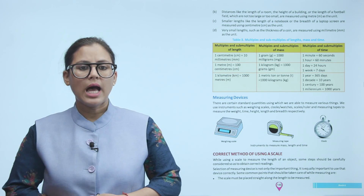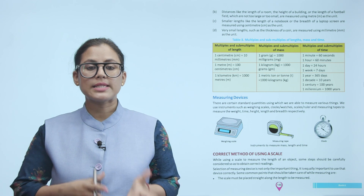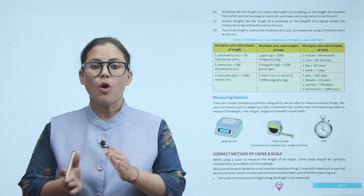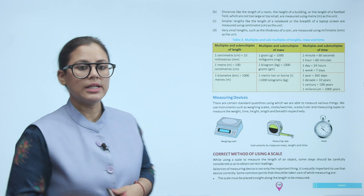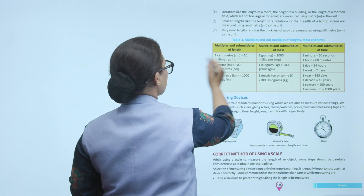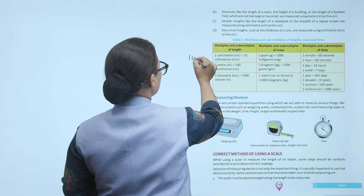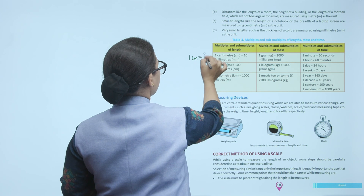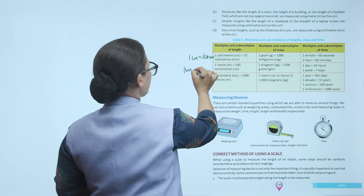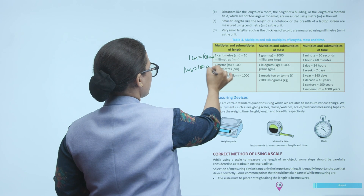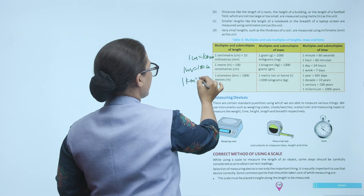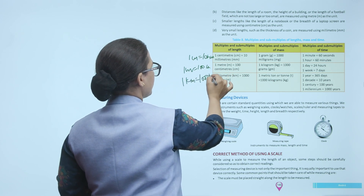Now let's see multiples and submultiples of length, mass, and time. Multiples and submultiples of length: 1 centimeter = 10 millimeters; 1 meter = 100 centimeters; 1 kilometer = 1000 meters. For mass: 1 gram = 1000 milligrams; 1 kilogram = 1000 grams; 1 metric ton = 1000 kilograms. There are also multiples and submultiples of time.